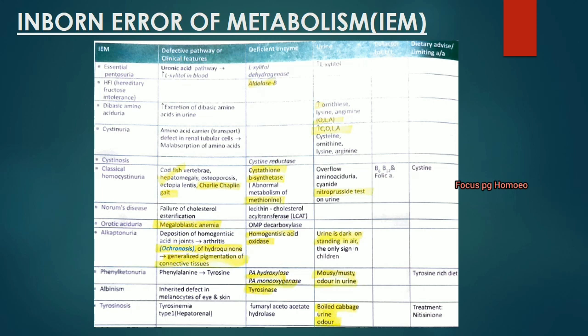Phenylketonuria (PKU): deficiency of phenylalanine hydroxylase (phenylalanine monooxygenase). There will be mousy/musty odor in the urine — a characteristic and commonly asked feature. In albinism, there is deficiency of tyrosinase enzyme with inherited defect in melanocytes of eye and skin. Tyrosinosis: deficient enzyme is fumarylacetoacetate hydroxylase; urine has boiled cabbage odor.